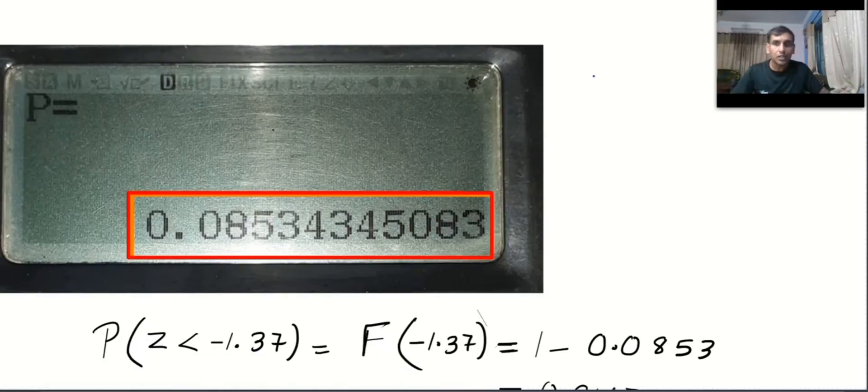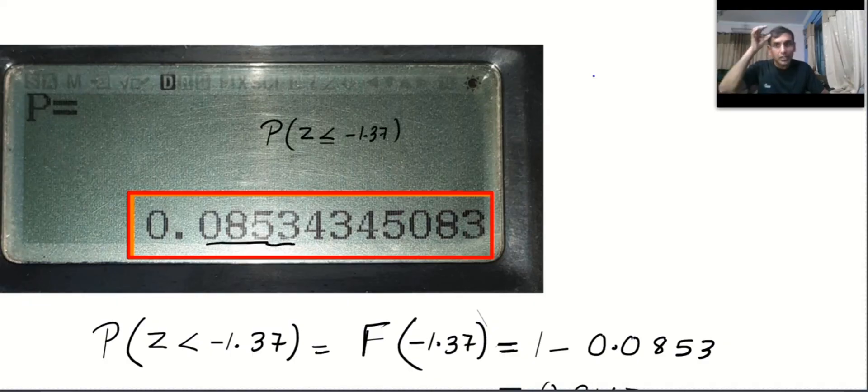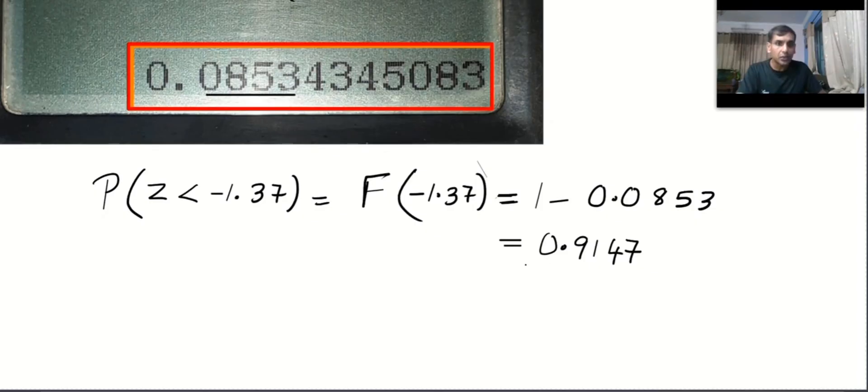So I'm going to put minus 99999 and then minus 1.37. That's it. I got the value. Probability z less than or equal to minus 1.37 to be 0.0853. And that's it, you do this one minus.